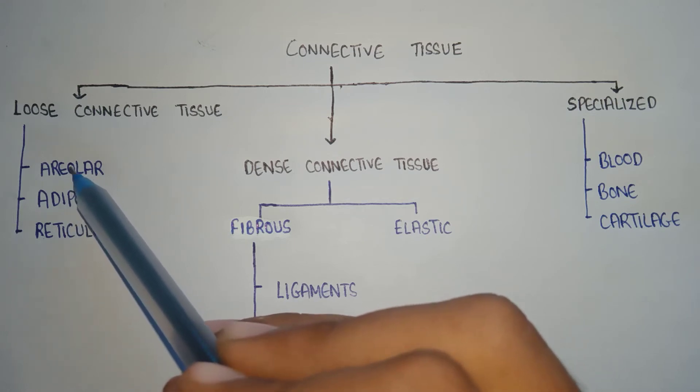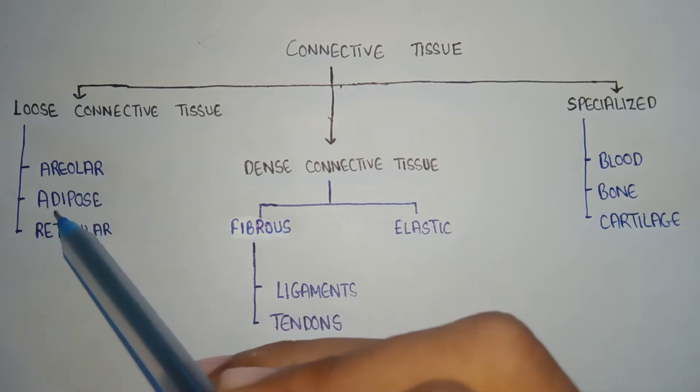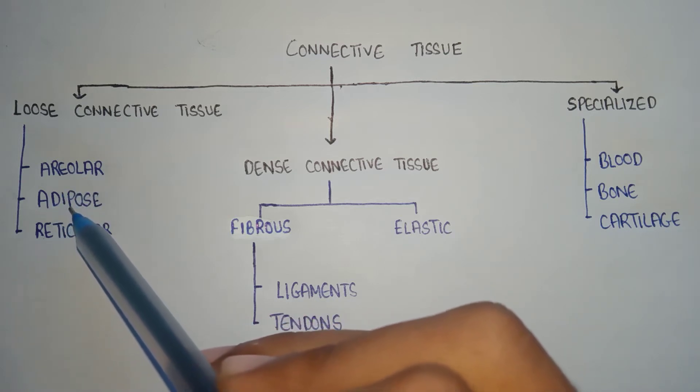Areolar tissue is present beneath the skin. Adipose tissue consists of fat cells, whereas reticular tissue consists of reticulin fiber.